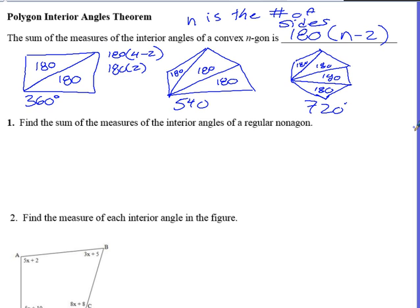So here's an example problem. It says find the sum of the measures of the interior angles, key there being sum, of a regular nonagon. Nonagon means it has nine sides. So my n value here is 9. So I would say 180 times 9 minus 2. And that gives me an answer of 1260 degrees.